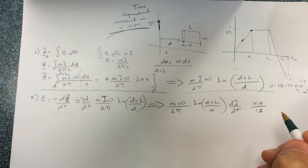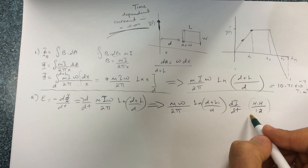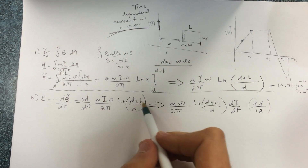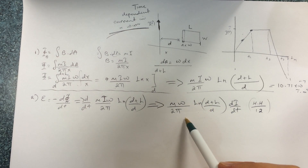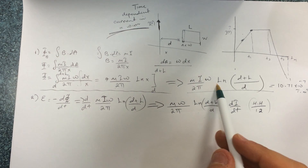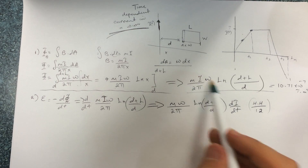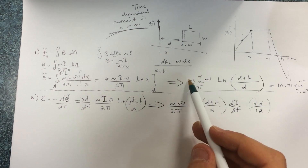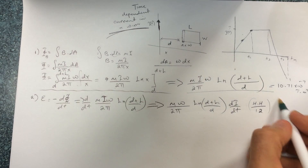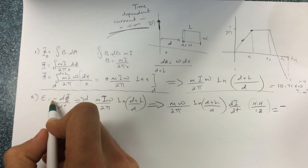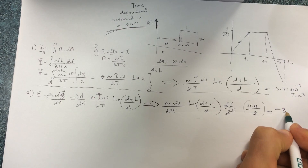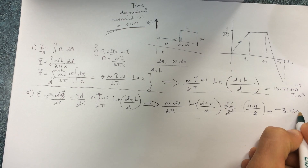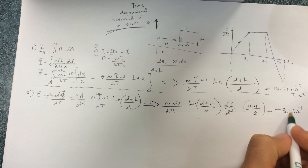Multiply the (μW / 2π) · ln((D + L) / D) expression by the slope dI/dt, and don't forget the negative sign from the equation. I got EMF = −3.95 × 10⁻⁸ volts.